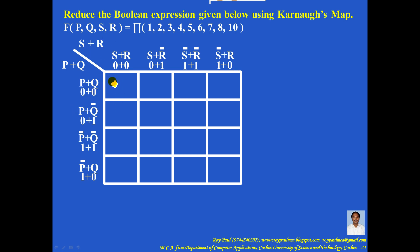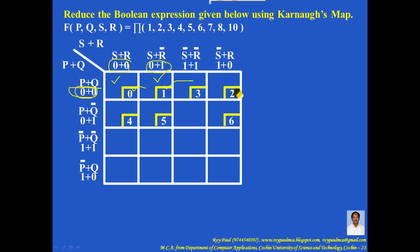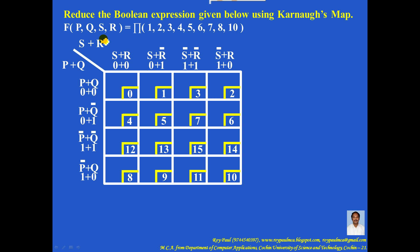Now, if you consider each binary cell, the binary number for the first cell is 0, 0, 0, 0 — write the decimal equivalent. For the next cell the binary number is 0, 0, 0, 1 — write its decimal equivalent. Similarly, in all the cells you can write the decimal equivalent. So step 1 is over: drawing the KMAP for this 4-variable boolean expression in the PI format.